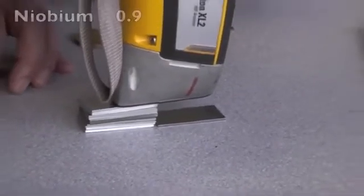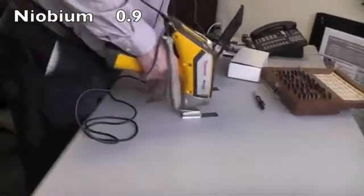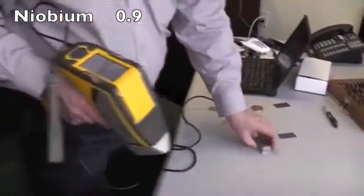The niobium is reading about 0.9, the molybdenum is reading 0.8, it's about double the actual value.